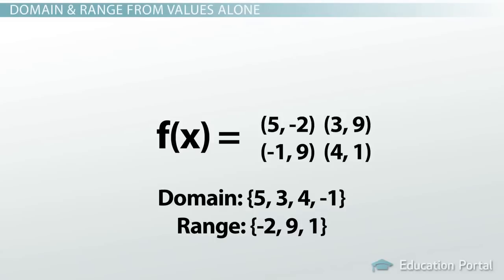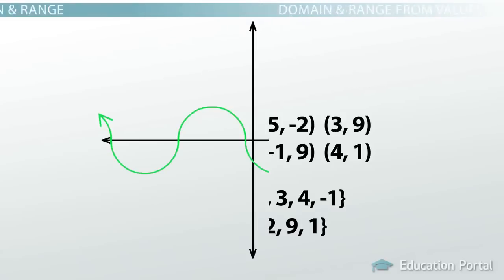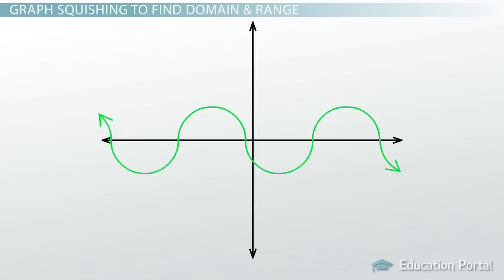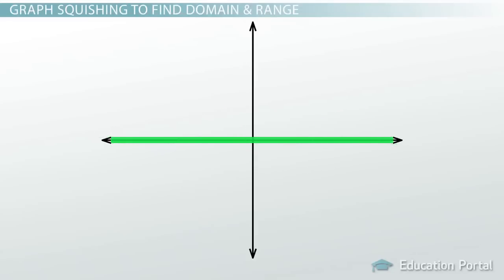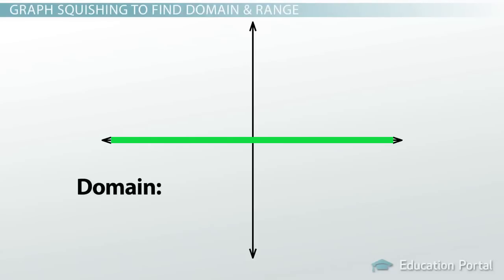We can up the difficulty by asking to determine the domain and range from a graph. When thinking about the domain, or the inputs, we need to look for the x values on the graph. Is there anywhere on the x-axis that this graph does not go? I usually answer this by imagining the whole graph being squished down onto the x-axis. The question becomes: what part of the axis has squished bits of graph on it? Assuming this graph continues on forever to the left and right, it looks like the whole axis is covered — meaning the domain is all real numbers.